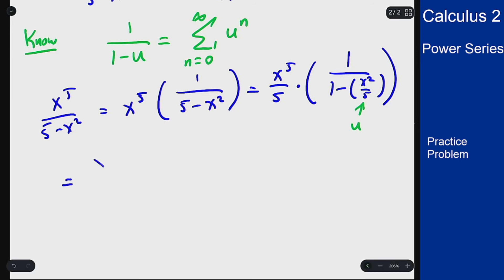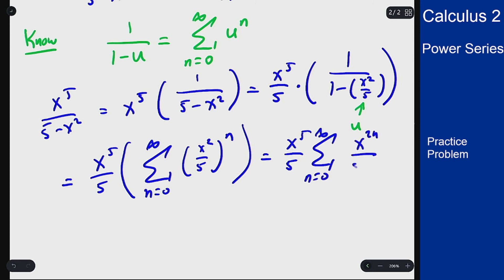So I'll still have x^5/5 in front, times the series expansion: sum from n=0 to infinity of (x^2/5)^n. Or (x^5/5) times the sum from n=0 to infinity of x^(2n) / 5^n.